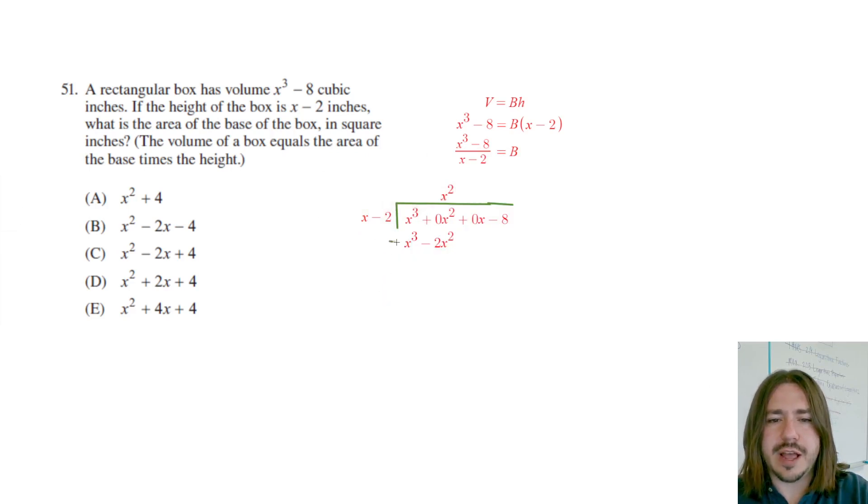So x squared times this gave me this. Now what I need to do is subtract these columns. So x cubed minus x cubed is zero. That is intentional, that's what you're trying to make happen. You're basically trying to cancel out these leading terms until you get to the very end. Zero minus negative two x squared would be positive two x squared. Whenever you subtract a negative that gives you a positive value.